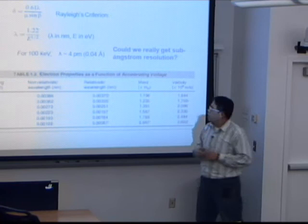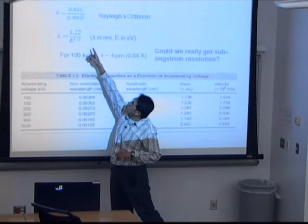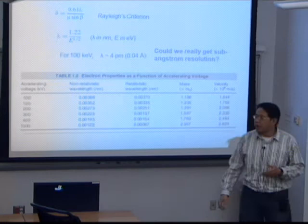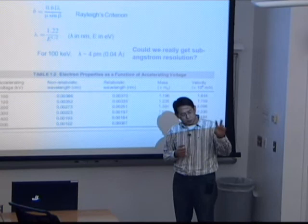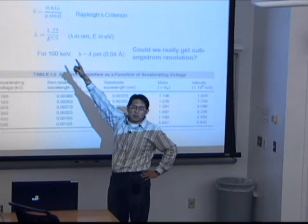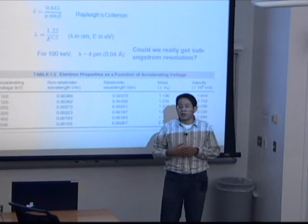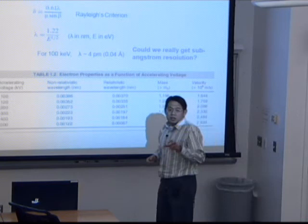Let's talk about the resolution of TEM. If we know a little bit about the optical microscope, the resolution is 0.61λ divided by μ·sin(β) — this is the Rayleigh criterion. Basically, the resolution is related to the wavelength of the source. In visible light we have a light source around 400 nanometers, so we typically have sub-micron resolution for the optical microscope.